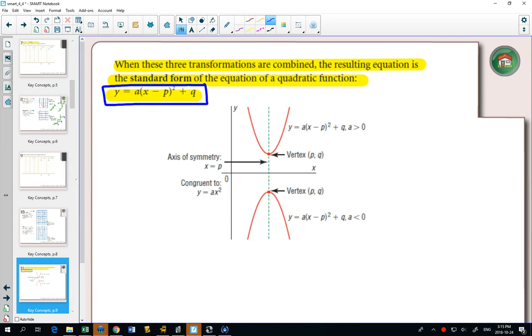If you have the standard form of a parabola, the standard form you used of a line was y equals mx plus b. The b was helpful because it was your y-intercept. The m was your slope.